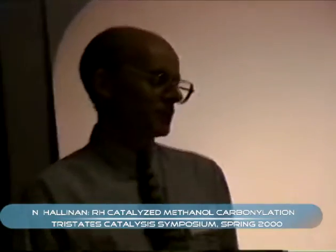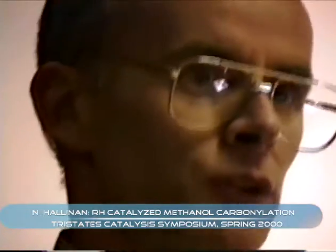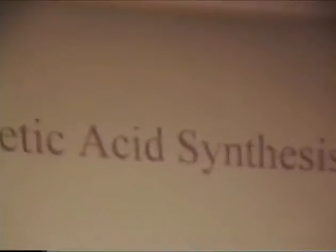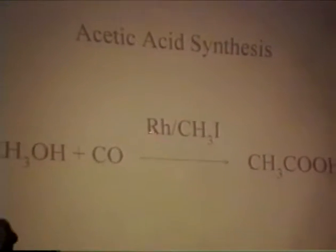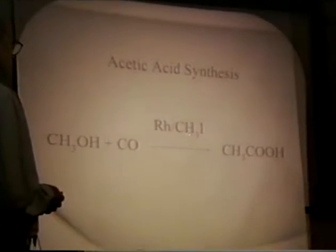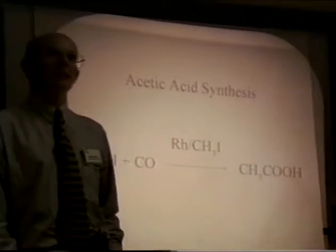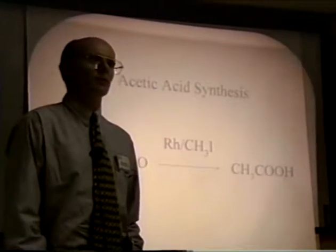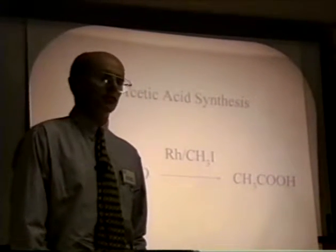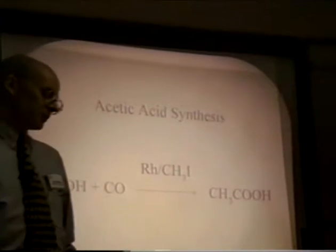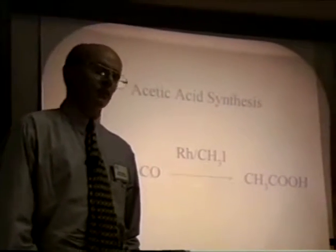The dominant method of acetic acid manufacturing in the world today is via a process invented by Monsanto over 30 years ago. This was a homogeneous liquid phase continuous process involving the combination of methanol and CO, catalyzed by a rhodium catalyst and an iodide species. This is a very elegant, neat reaction with high selectivity greater than 99%, and one can achieve reasonable rates under pretty mild conditions. The general principles of this process as initially developed by Monsanto are still valid today.